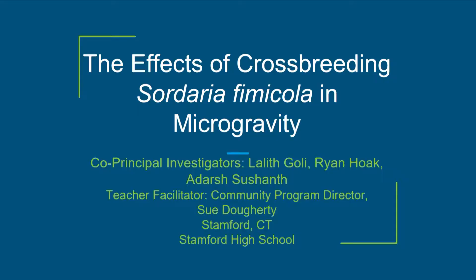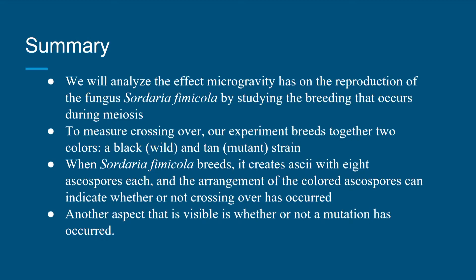Hello. Our experiment is analyzing the rates of crossing over, which is a process conducted in reproduction. In order to observe this, we'll be breeding together two different strands of the fungus Sordaria fimicola. The two colors will be wild and tan. We'll also be able to observe the rates of mutations that occur under the effect of a microgravity environment.